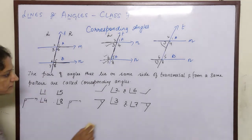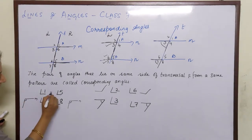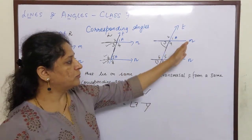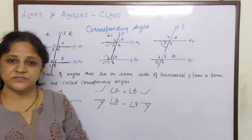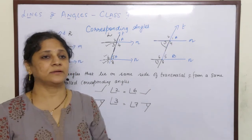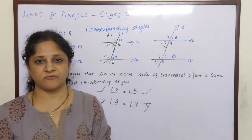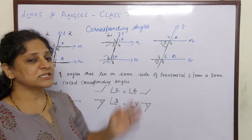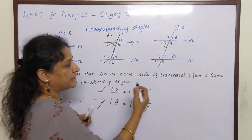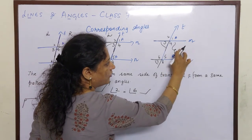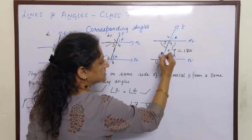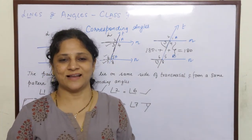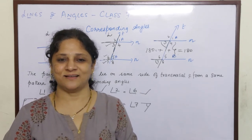So what did we learn today? When two parallel lines or any other lines are cut by a transversal, interior angles, exterior angles and corresponding angles are formed. Alternate interior angles are equal. Alternate exterior angles are equal. Corresponding angles are also equal. Co-interior angles — interior angles on the same side — are supplementary. We will do many more sums on this in the following classes. Bye for now, and if you like the video, press the like button!